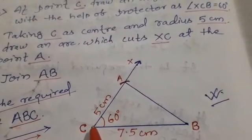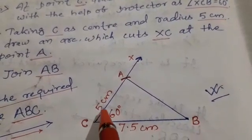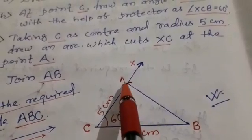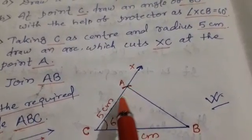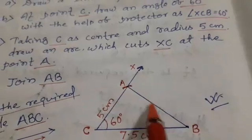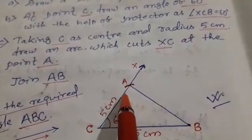Take radius from C at 5 cm and make an arc here. Now join AB. It is a required triangle.